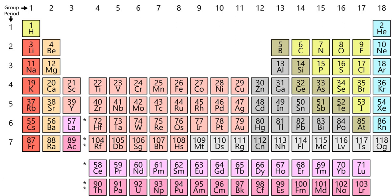In chemistry, a nonmetal, or nonmetal, is a chemical element that mostly lacks metallic attributes. Physically, nonmetals tend to have relatively low melting and boiling points and densities, are mostly brittle if solid, and are usually poor conductors of heat and electricity.